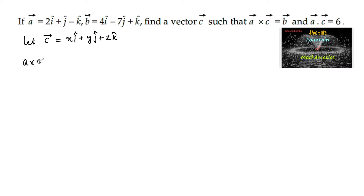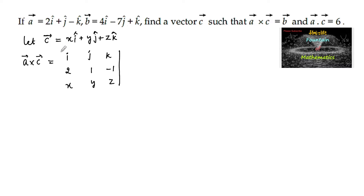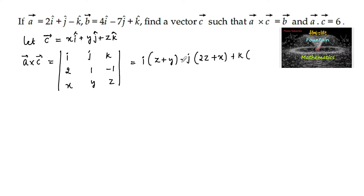Let us find a cross c. Setting up the determinant with i, j, k and the scalar components of vector a: 2, 1, and minus 1, and the scalar components of vector c: x, y, z. Expanding the determinant gives i times of (z plus y) minus j times of (2z plus x).